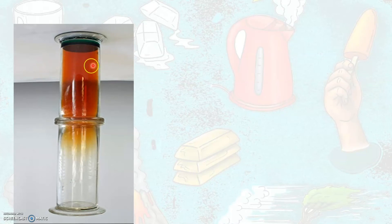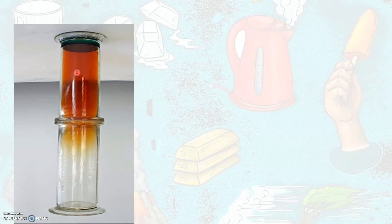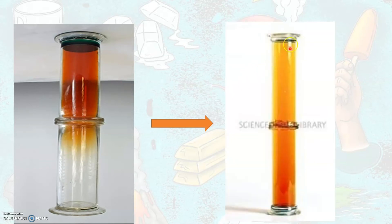Now, as this gas jar filled with nitrogen dioxide gas is inverted over another gas jar that is empty, after some time we observe that the nitrogen dioxide gas in the first gas jar has started slowly moving into the other gas jar that was initially empty.